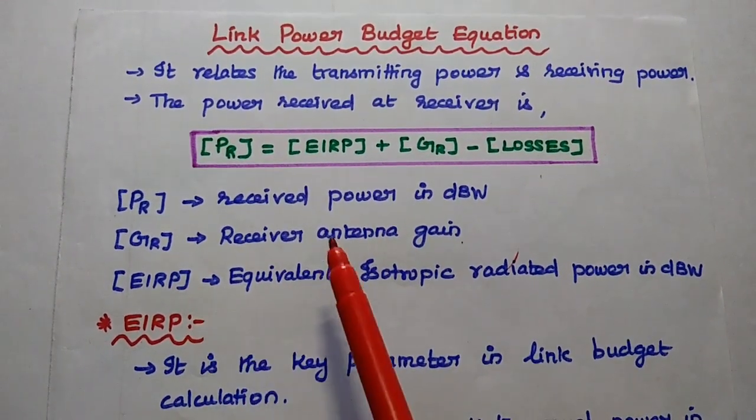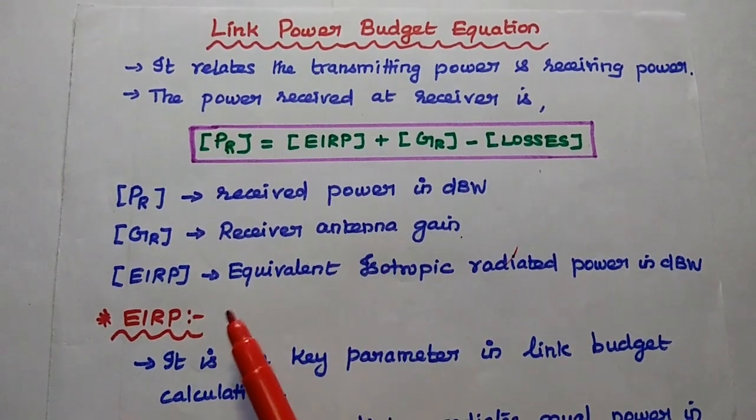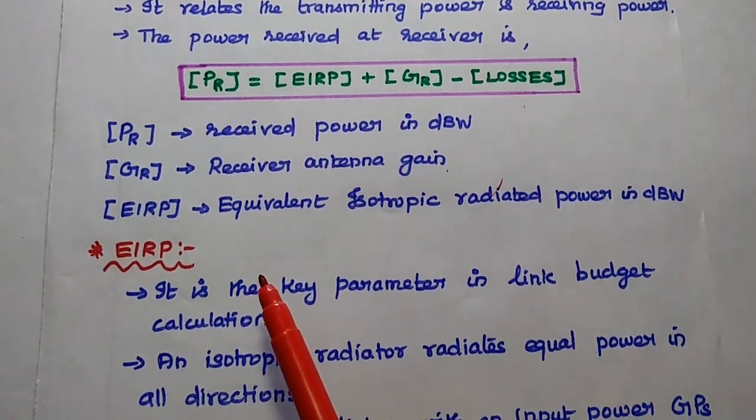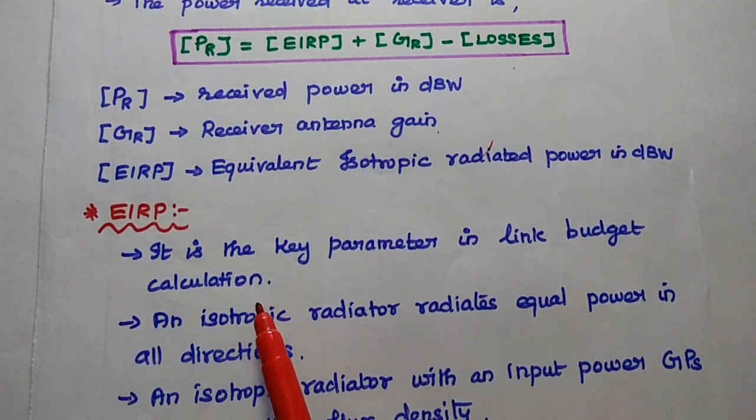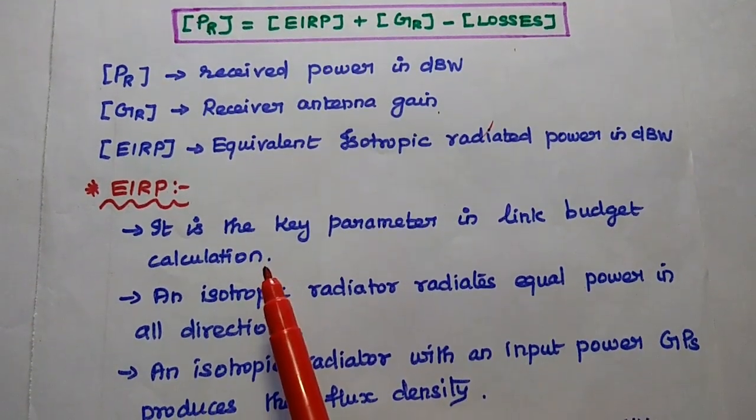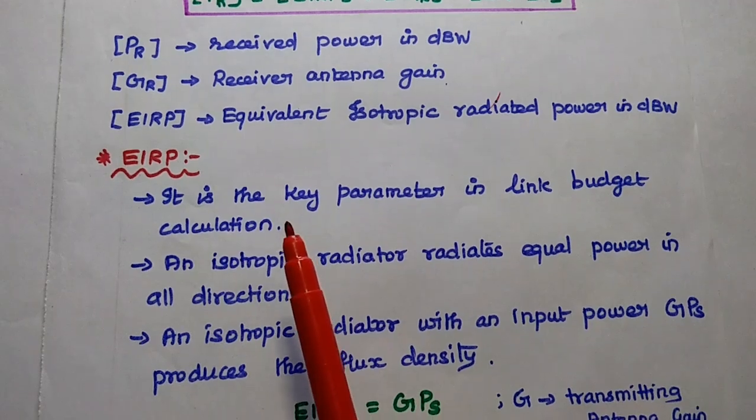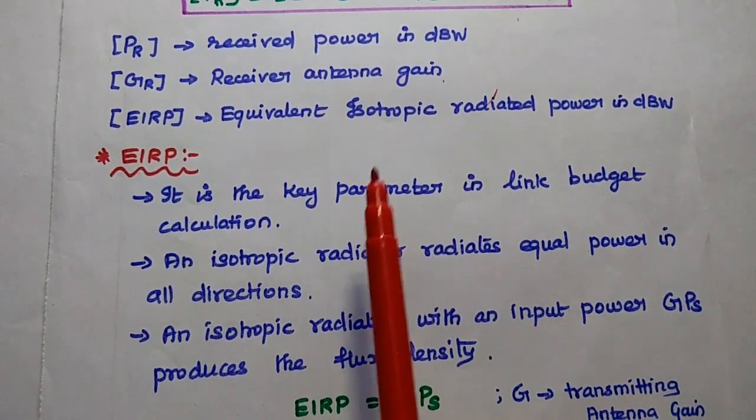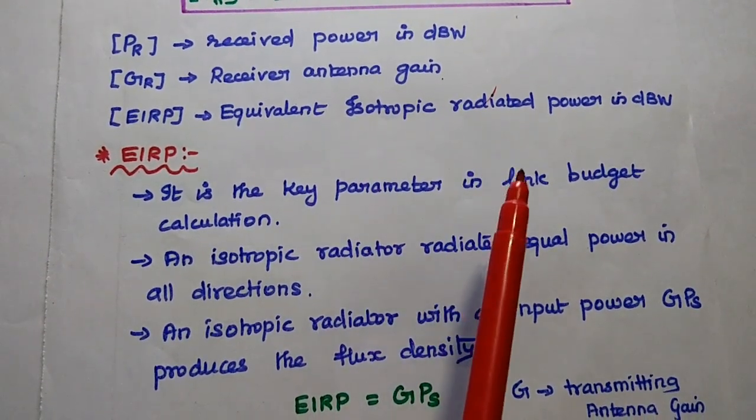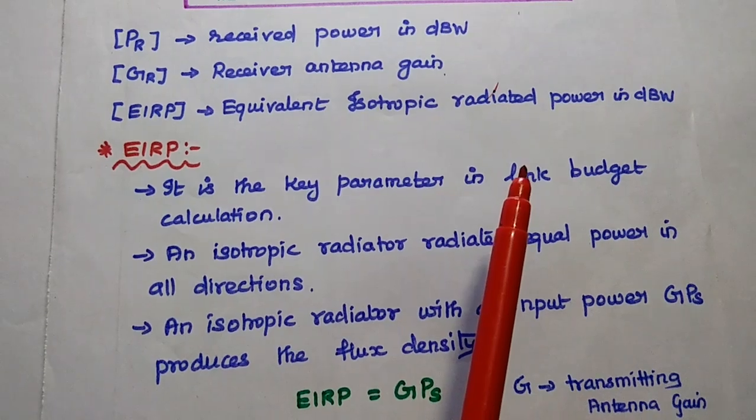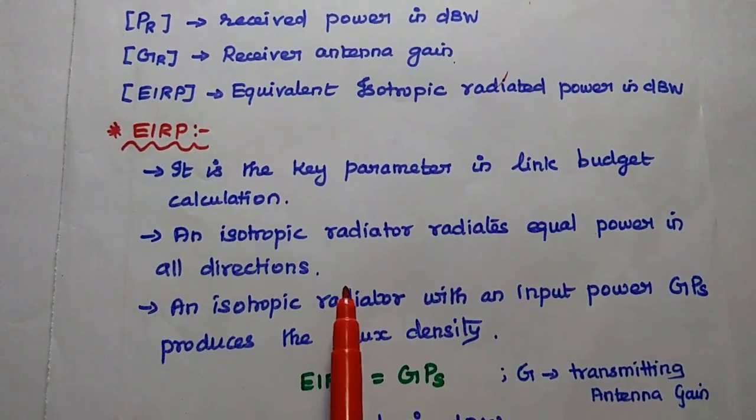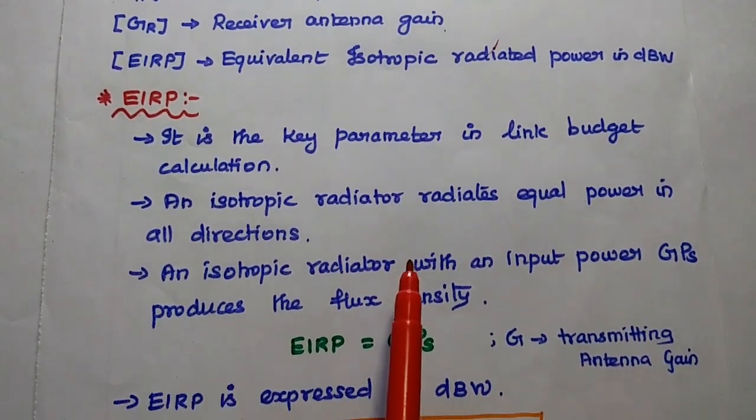GR is the receiver antenna gain. EIRP, here this EIRP is the important parameter used to calculate the link power budget equation. EIRP means equivalent isotropic radiated power in dB watt, so it is the key parameter in link budget calculation.